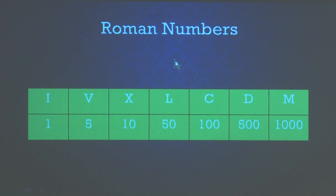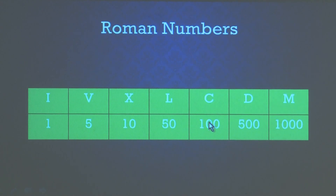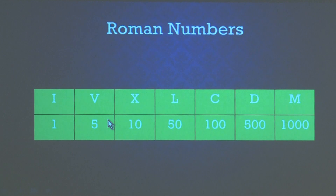Roman numbers do not use place value — that is the difference between the Indian system and Roman numerals. Here: 1 is written as I, 5 as V, 10 as X, 50 as L, 100 as C, 500 as D, and 1000 as M. We have to learn these. In my next class I will explain how to convert Roman numbers to Hindu-Arabic and vice versa.